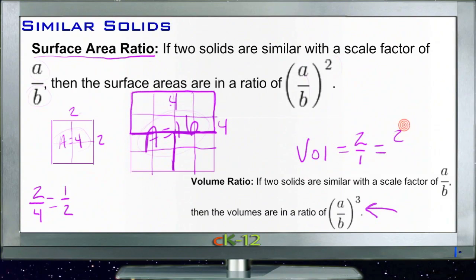So for volume, if we have a comparison of two to one, then for volume it's actually going to be two cubed over one cubed, or eight to one. So for volume you cube the ratios top and bottom, and then for surface area you square the ratios top and bottom.